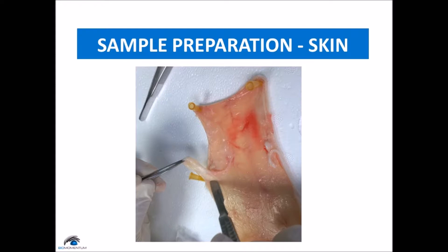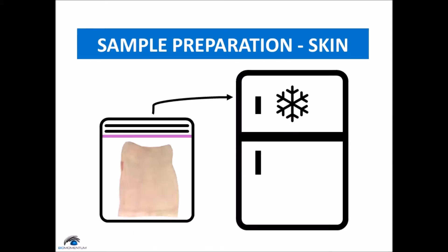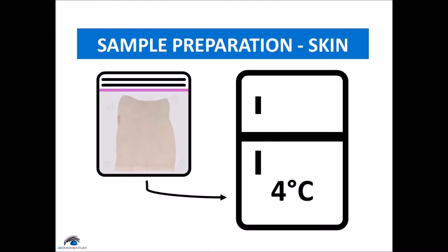If the testing procedures are not performed on the same day of the dissection, note that the rectangular shaped skin can be stored at minus 20 degrees and then thawed at 4 degrees for at least 45 minutes before placing the skin sample on the cutting board.